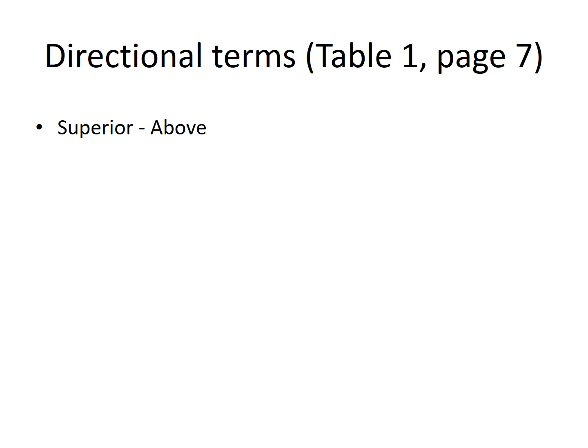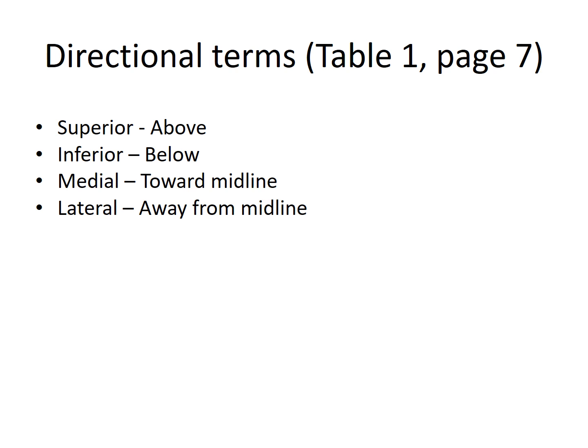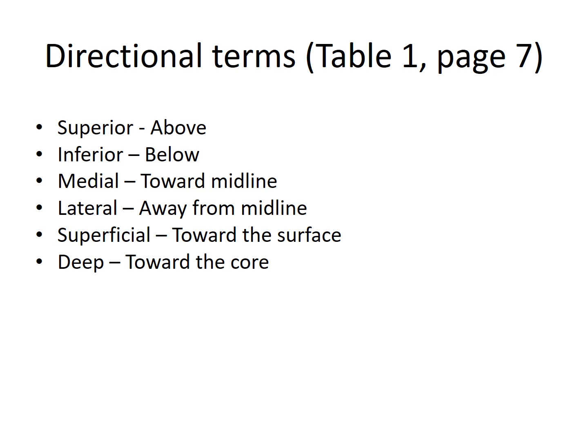There are some very important directional terms for this lab and for your career, summarized in table one on page seven. Superior is defined as above something; inferior is below. Medial is towards the midline or middle of the body; lateral is away from the midline. Superficial means towards the surface — for example, freckles on the skin are considered superficial. Deep means towards the core — veins in the arm, for example, are deep.